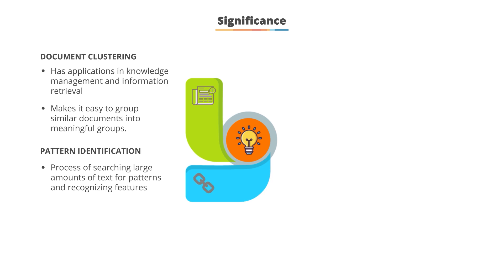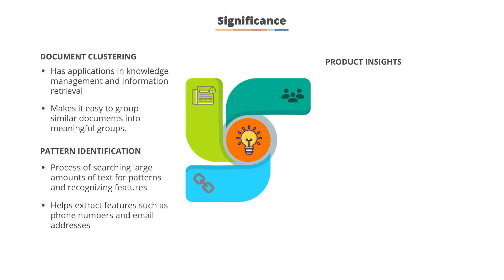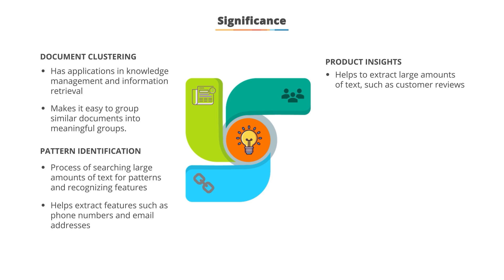Pattern identification: text mining is the process of automatically searching large amounts of text for patterns, and recognition of features such as telephone numbers and email addresses can be extracted using pattern matches. Product insights: text mining helps to extract large amounts of text, for example customer reviews about products.